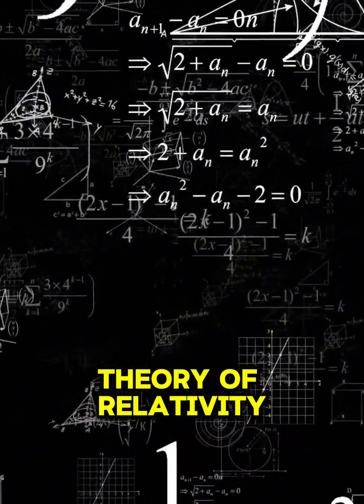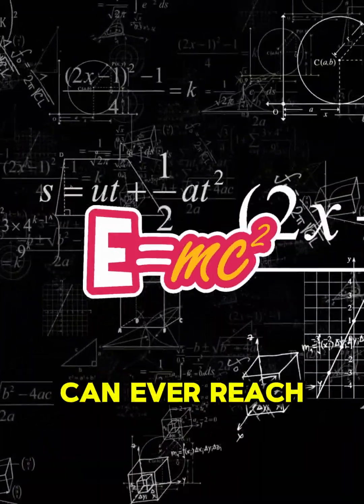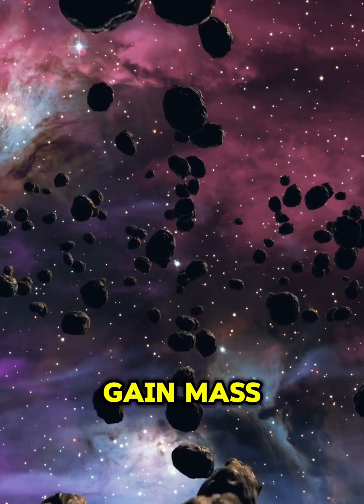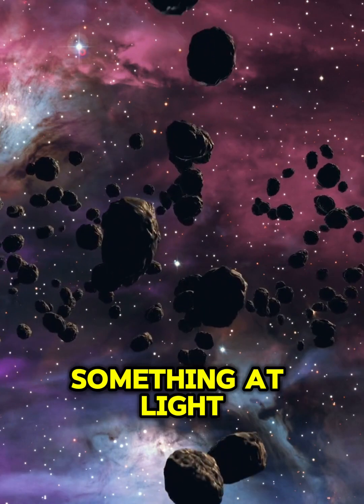Einstein's theory of relativity tells us that nothing with mass can ever reach the speed of light. Why? Because as you go faster, you gain mass, and it would take infinite energy to move something at light speed.